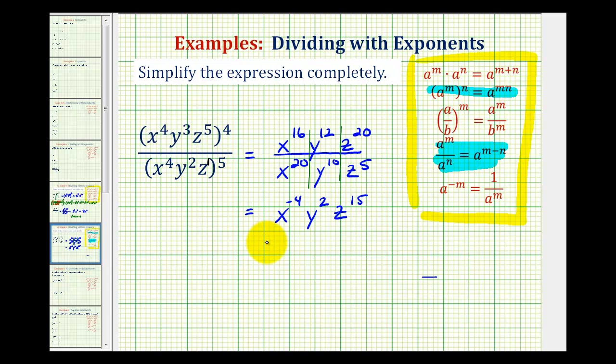Now we're almost done, but we cannot leave the expression in this form. An expression is not considered simplified if it contains negative exponents. For the last step, we'll use the rule that a to the power of negative m is equal to one over a to the positive m.